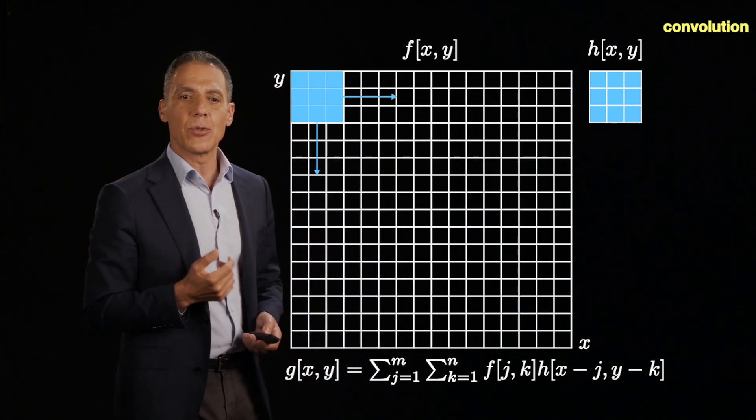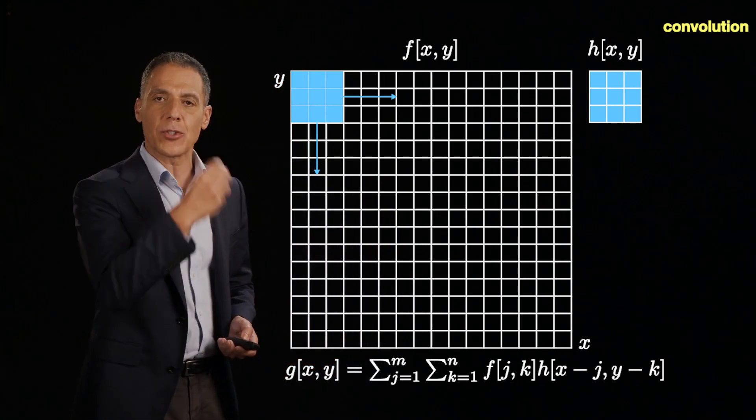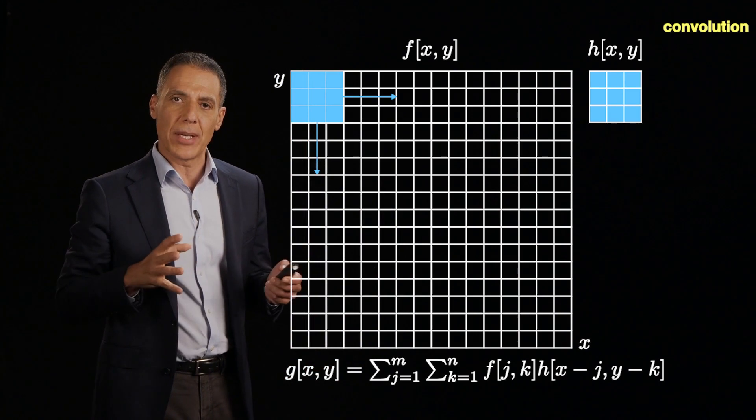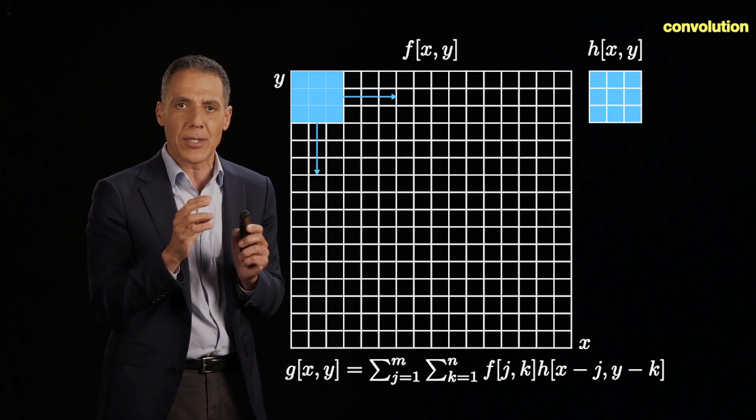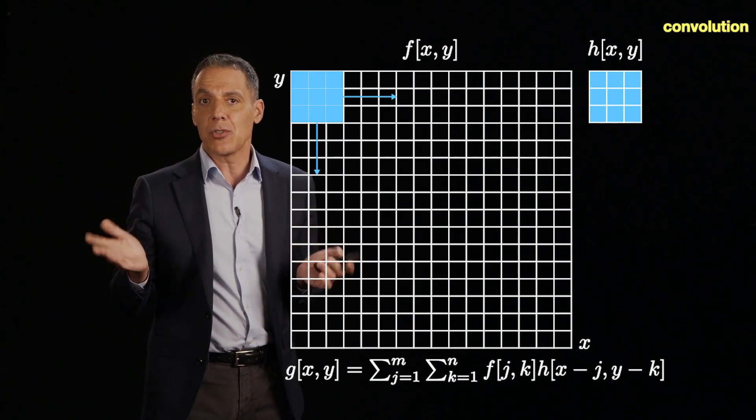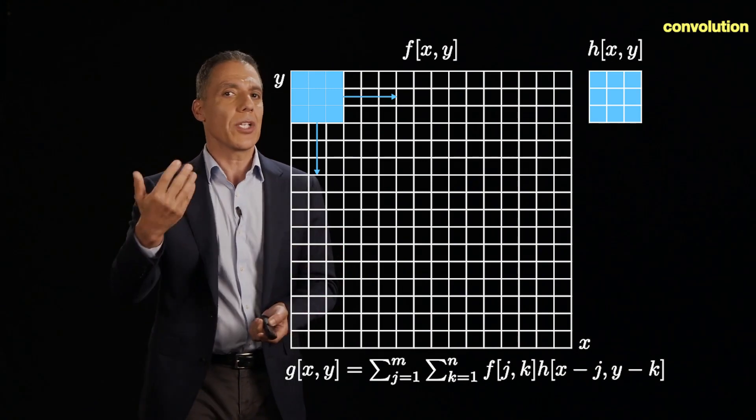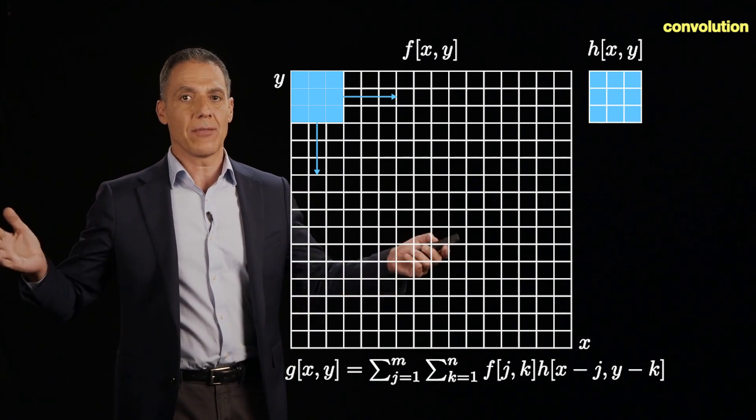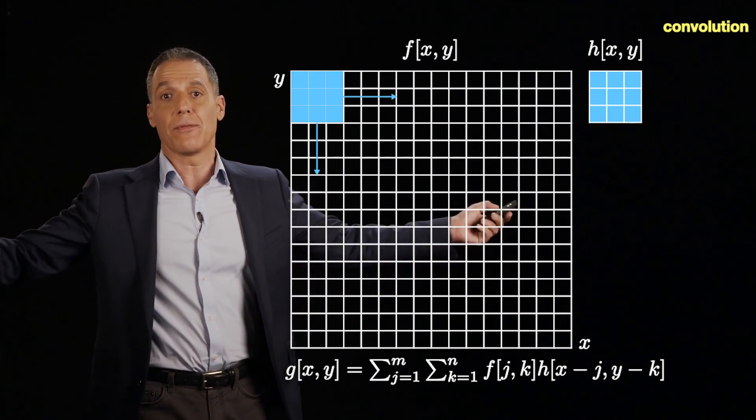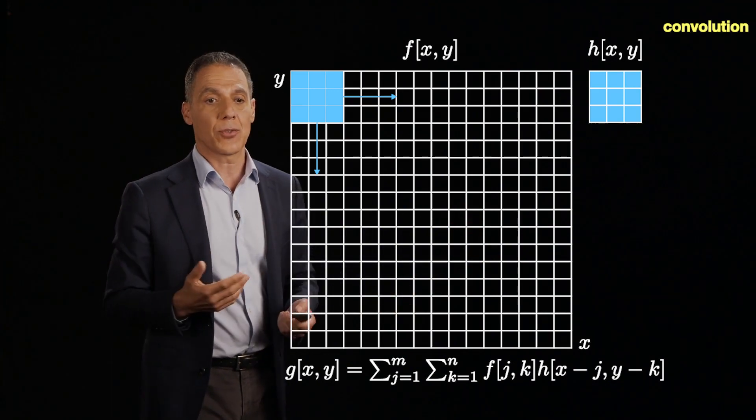But as that filter response gets bigger and bigger, we've been doing these little kernels, 3 by 3, 1 by 3, but we don't really have control over that. Why? Because you put a unit impulse response into an LTI, you get a response out 5 by 5, 7 by 7, 9 by 9, 21 by 21. I don't have a lot of control over that.